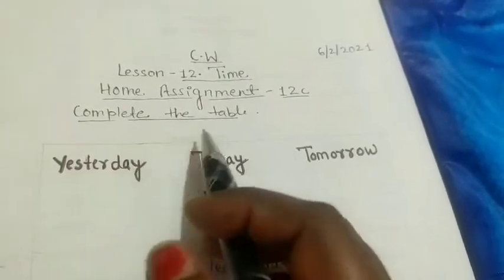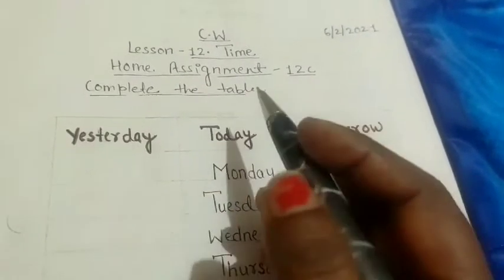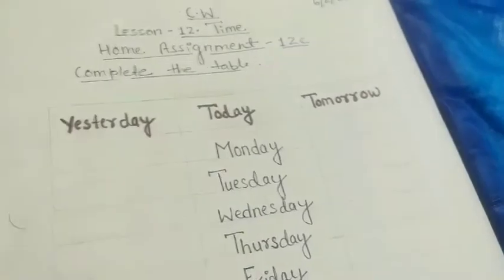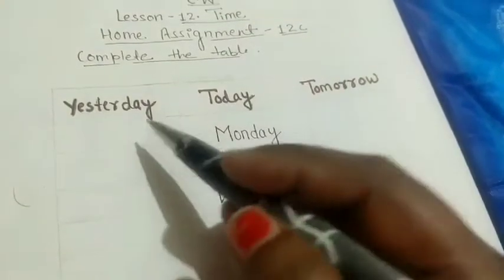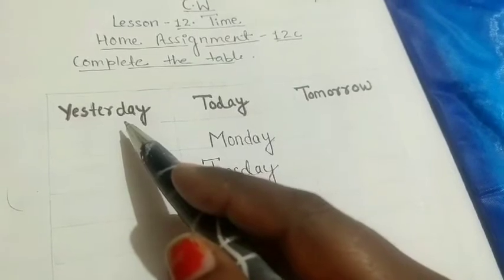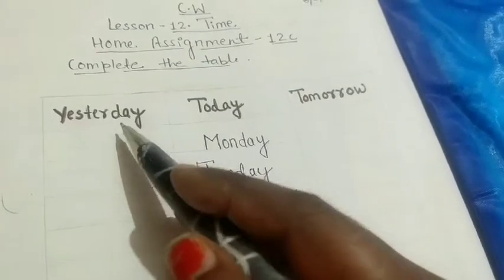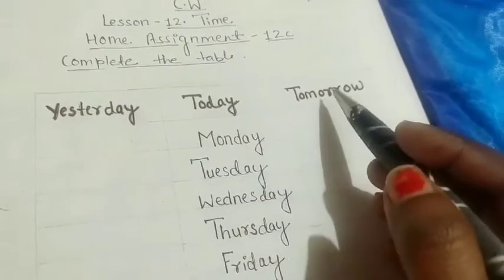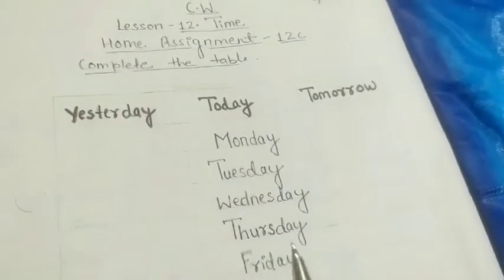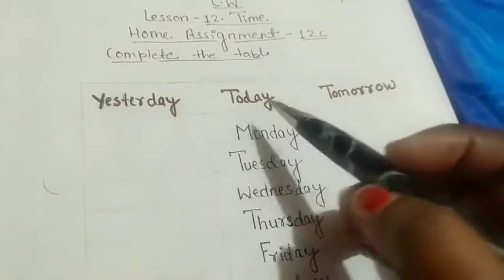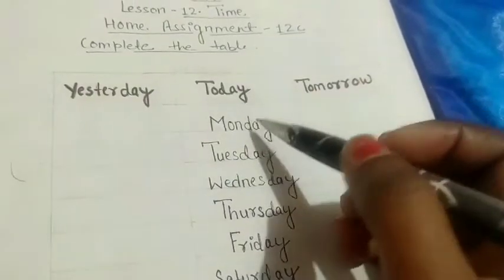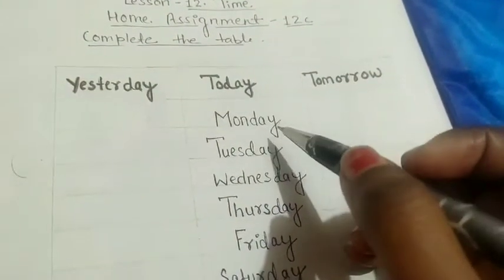Today we are going to complete the table. In this table there are three columns: yesterday, today, and tomorrow. Suppose today is Monday.